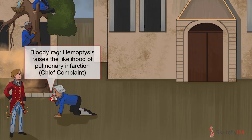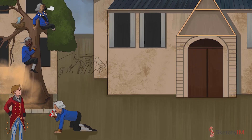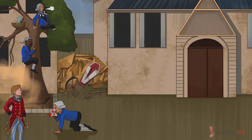While hemoptysis is relatively rare, its presence raises the likelihood of pulmonary infarction, which occurs when a smaller peripheral embolus occludes a peripheral pulmonary artery. Hemoptysis and chest pain occur in patients with pulmonary infarction due to the intense inflammatory response elicited by the infarcted lung tissue.